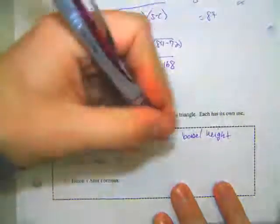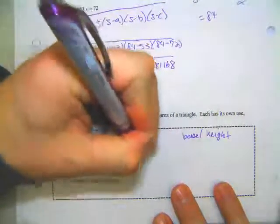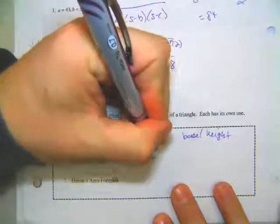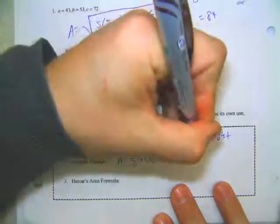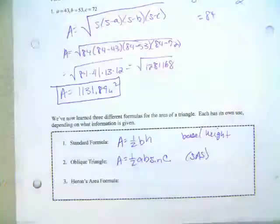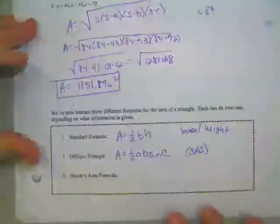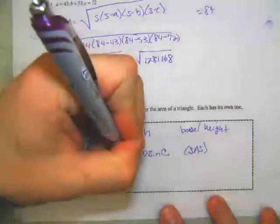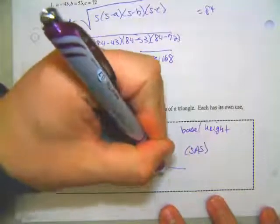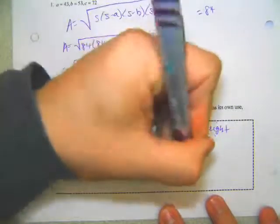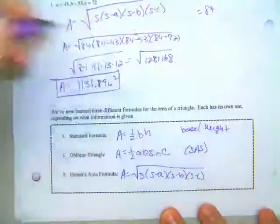An oblique triangle, the area is 1 half times a, b, sine of c. It has to be a side angle, side triangle for that one to work. And then Heron's formula, which we just said was s times s minus a times s minus b times s minus c.